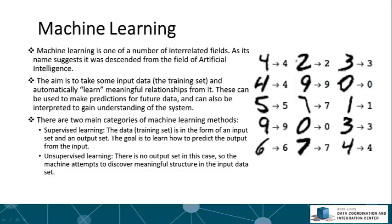On the right here I've got a figure to illustrate a specific example. Here the input data is an image of a handwritten digit, and the output, the corresponding output, is the digit that is being written by hand.